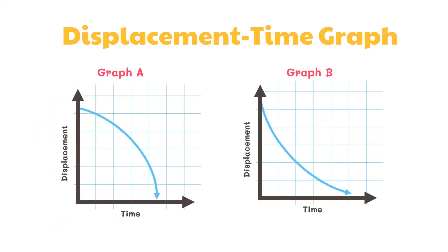Consider these two graphs — both show plotted points forming a curved line. The object depicted by graph A is moving with a negative velocity since the slope is negative. Furthermore, the object starts with a small velocity since the slope starts out small and finishes with a large velocity since the slope becomes larger. That means this object is moving in the opposite direction and speeding up.